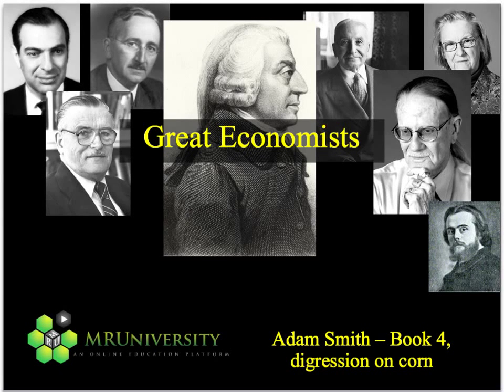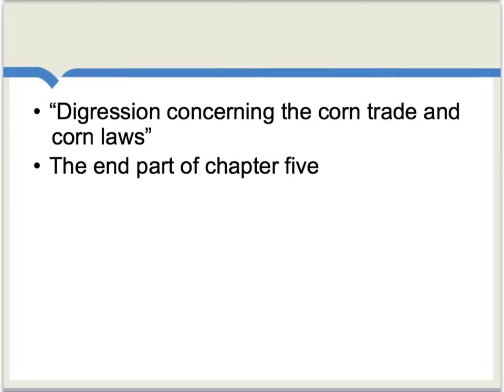Let's look at Smith's famous digression on corn, which shows perhaps his deepest understanding of the price system. The formal title of this section is 'Digression Concerning the Corn Trade and Corn Laws,' and keep in mind this is the end part of Chapter 5 in Book 4. As English was used in Great Britain at that time, the word corn was referring to wheat and other grains.